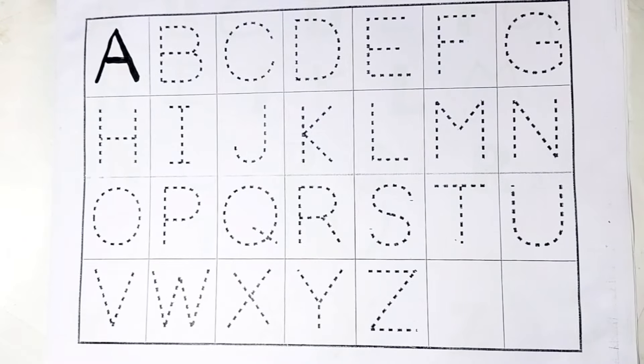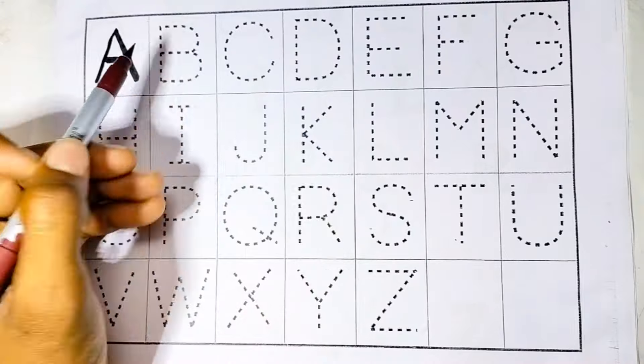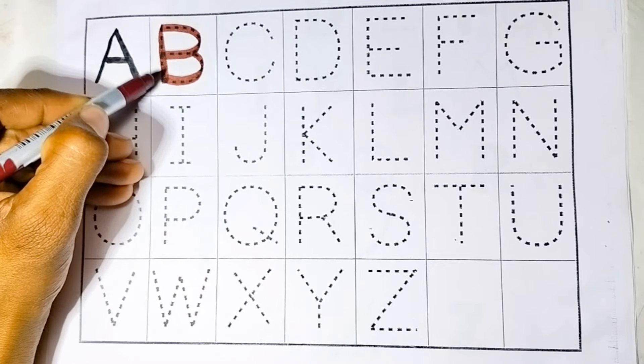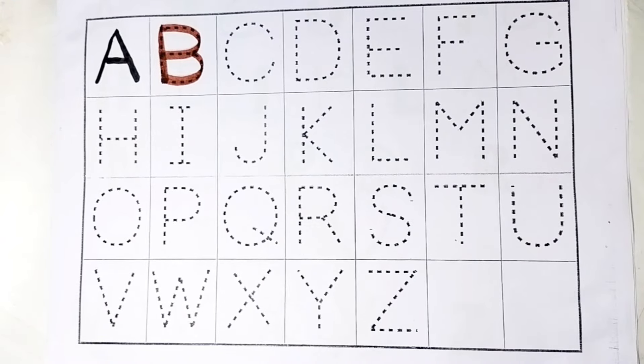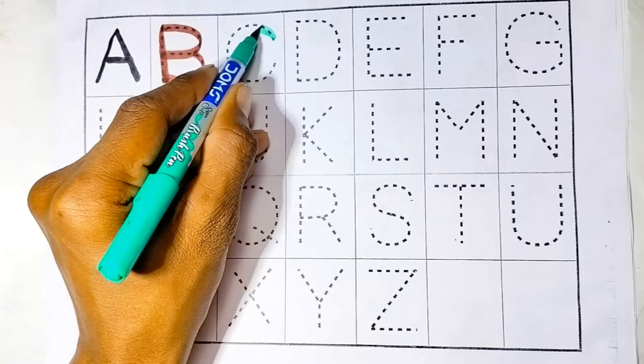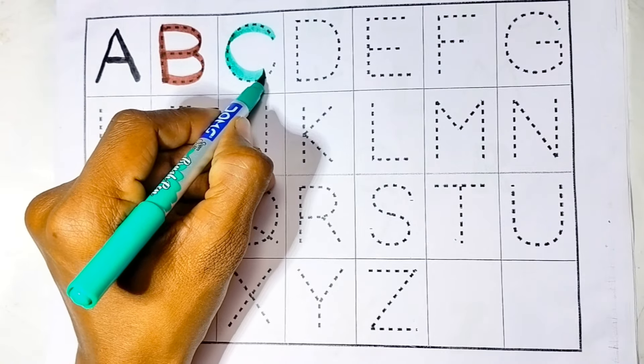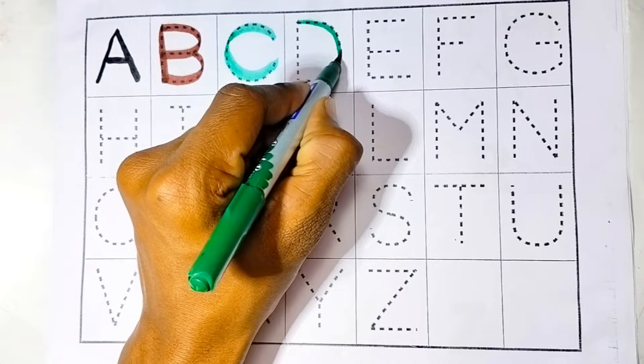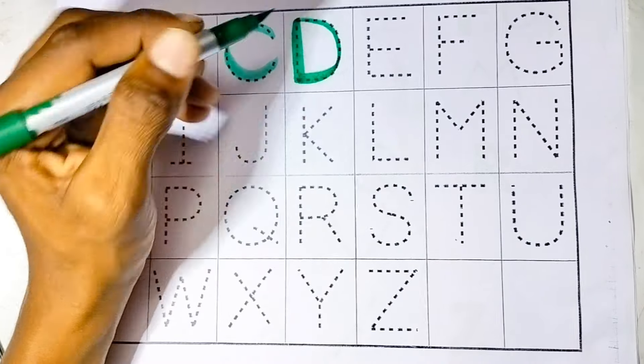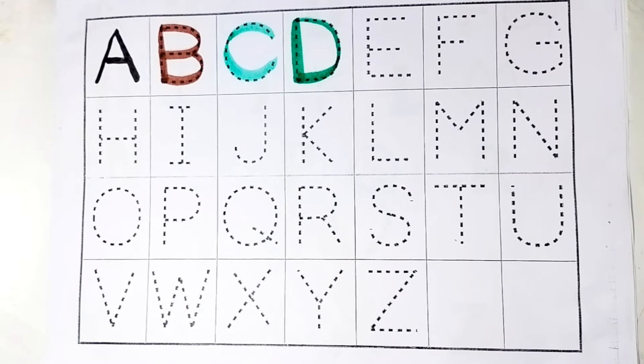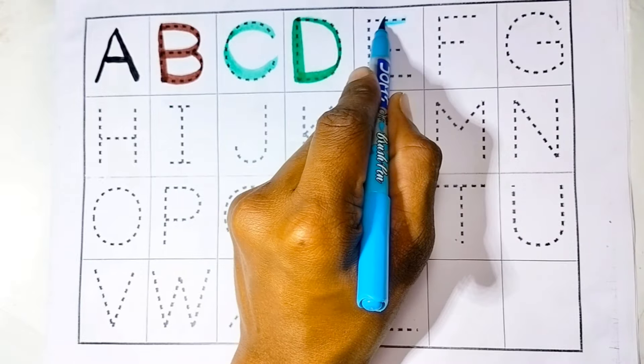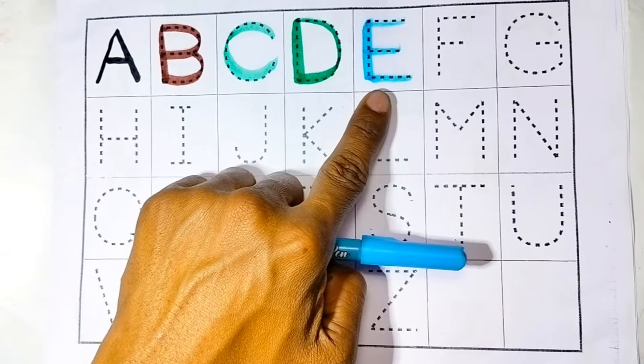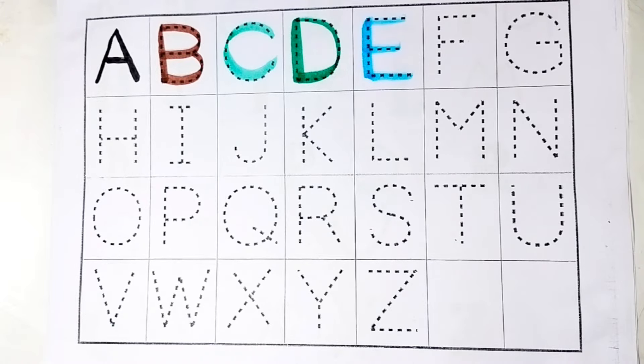A, A for apple, brown color. B, B for ball, slaty color. C, C for cat, dark green color. D, D for dog, sky blue color. E, E for elephant, purple color.